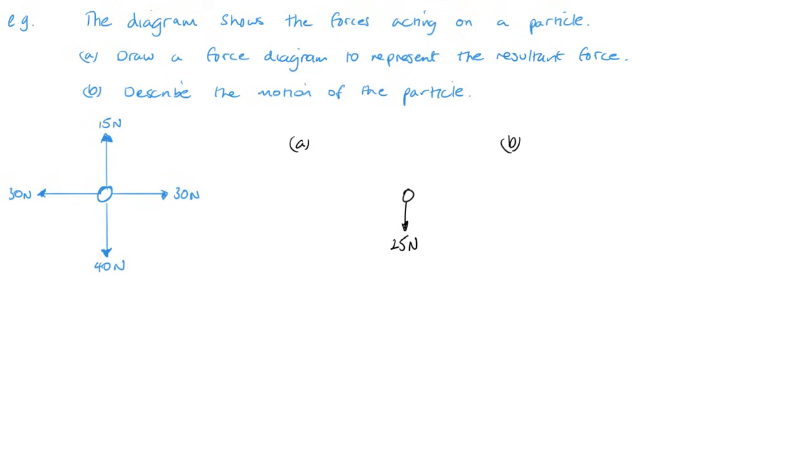Now describe the motion of the particle. The particle is accelerating. It's not moving with a constant velocity because there's a force acting upon it, so that force is constantly speeding it up. For it to go at a constant velocity it needs to be balanced.